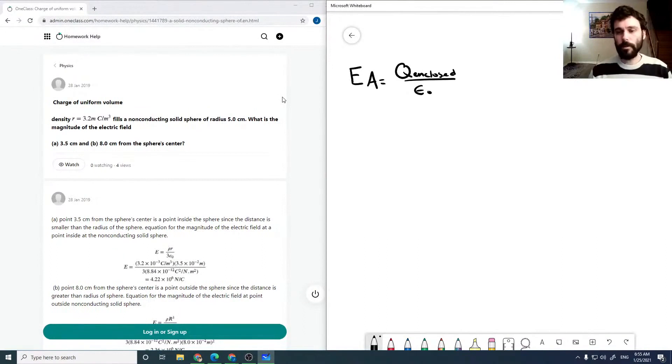We've got a uniform sphere of radius 5.0 centimeters, and want to know the magnitude of the electric field at r of 3.5 centimeters for part A. So that's inside the sphere.